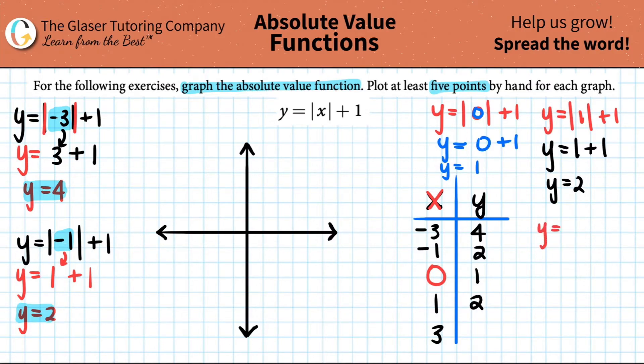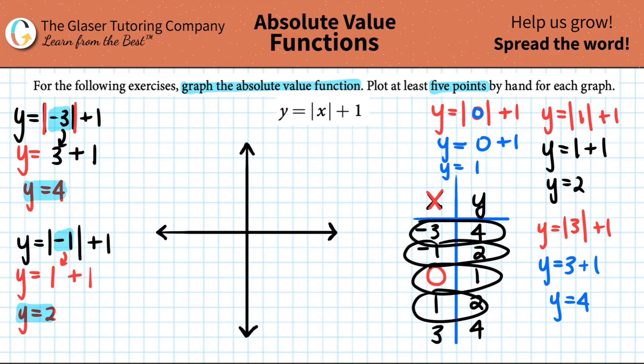And then last one, Y equals the absolute value of three plus one. This is already a positive number. So the absolute value of three is, you guessed it, three, and three plus one is four. And there is your fifth point. So here are your five points.